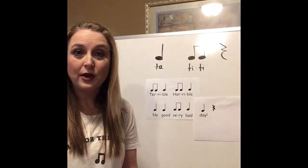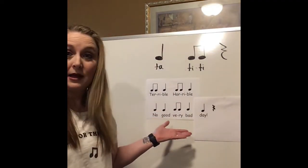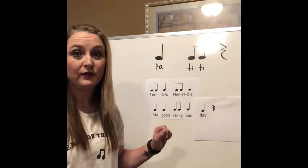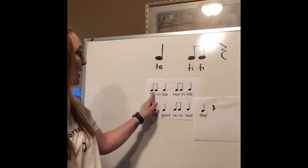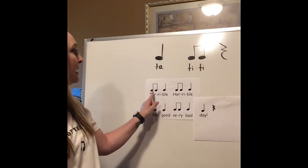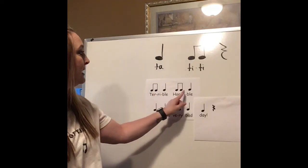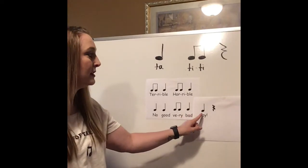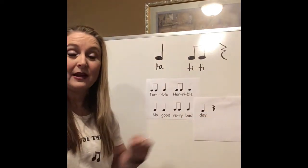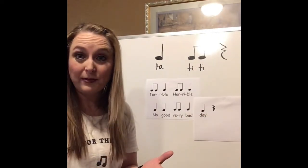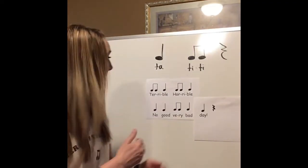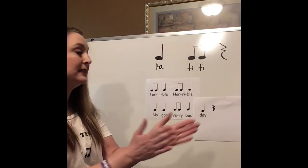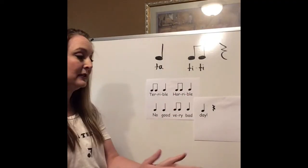Let's see if we can use what we know to read the rhythm of this rhyme that's on the board. Let's read the rhythm first. Here we go. Ti-ti-ta. Ti-ti-ta. Ta-ta. Ti-ti-ta. Ta-ta.